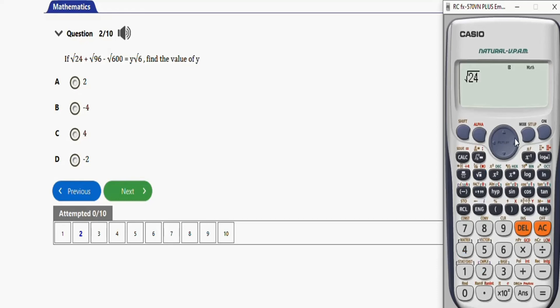Let's input √24 plus √96 minus √600. Now to bring out the equality sign on this calculator, press alpha and this card button equals. We're going to replace y with x on the calculator, because this calculator recognizes x easily. So to bring out x press alpha and this button, then √6.